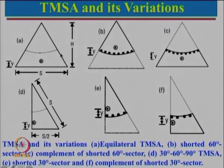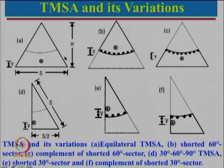Recalling our earlier discussion on the equilateral triangular microstrip antenna: we had taken a feed point and noted that the field distribution is 0, plus, double plus, triple plus along one direction, and 0, minus, double minus along the other. These are the constant voltage contours, so one side will be plus, another double plus, and the other minus.